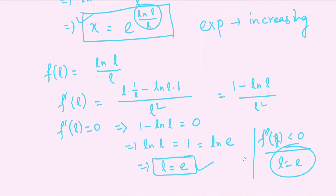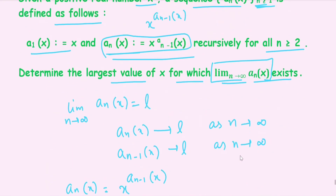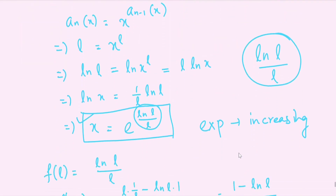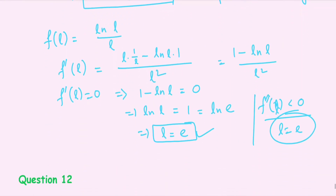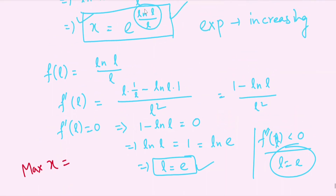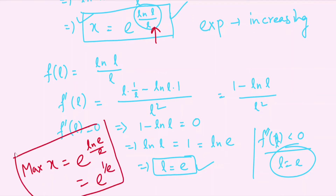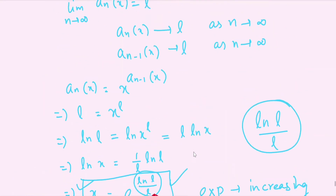At the point L = e, the maximum value of x occurs. Therefore the largest possible value of x is x = exp(ln(e)/e) = exp(1/e) = e^(1/e). This is the answer to question 5.